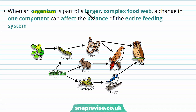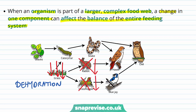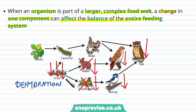When an organism is part of a larger complex food web, a change in one component can affect the balance of the entire feeding system. For example, if there is a drought in a woodland, the grass will suffer. If the grass suffers, the rabbit has nothing to eat and may die, and neither does the grasshopper, so their levels may drop. If their levels drop, the hawk and the blue jay don't have much to feed on and suffer too. Then the owl may be affected as there are fewer things to feed on. One component can drastically change effects throughout the whole food web.